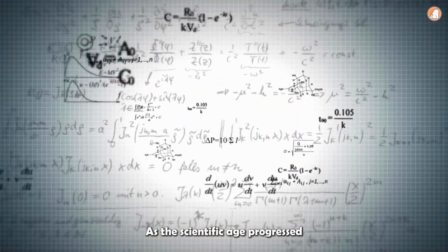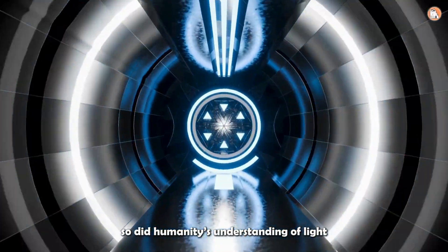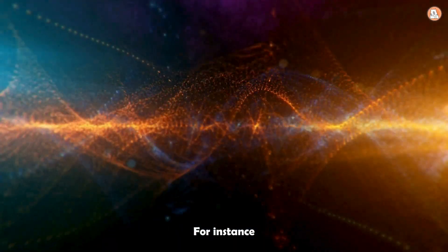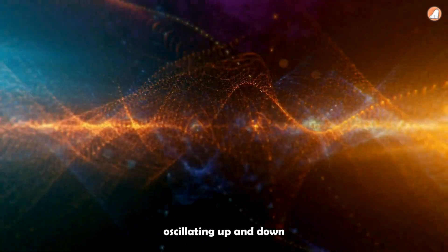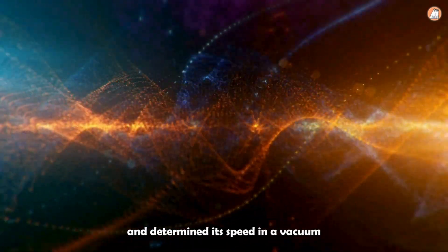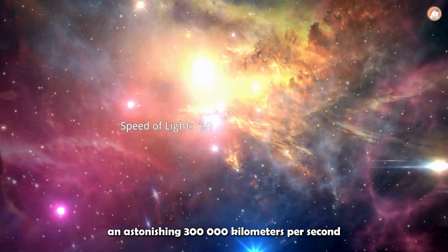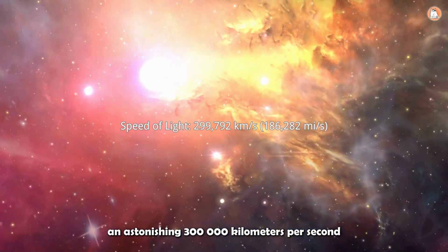As the scientific age progressed, so did humanity's understanding of light. For instance, we discovered that light travels as waves oscillating up and down, and determined its speed in a vacuum, an astonishing 300,000 kilometers per second.